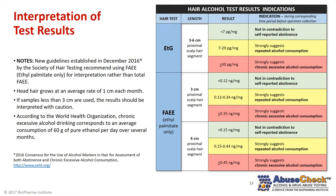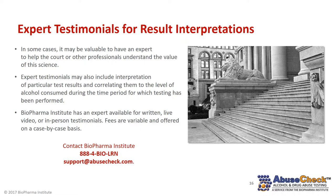This chart shows ETG and FAEE test results with three different ranges shaded in green, yellow, and red. The Society of Hair Testing has established various cutoff values for different stages of alcohol consumption, including abstinence, repeated alcohol consumption, or chronic excessive alcohol consumption. These values help provide a context in which the test results can be related to the patient being tested. The Society of Hair Testing guidelines were updated in 2016 to use ethyl palmitate only as the metabolite to establish FAEE levels. The interpretation of hair testing results can be complicated and confusing, particularly to someone not skilled in this area. At times, test results may not be conclusive of alcohol use or abstinence for a particular time period. Biopharma Institute has experts available for written, live video, or in-person testimonials who can help correlate test results and levels of alcohol consumed.